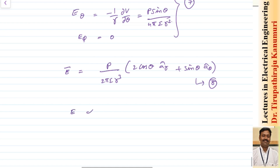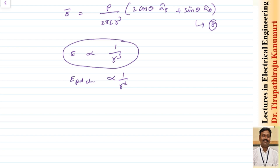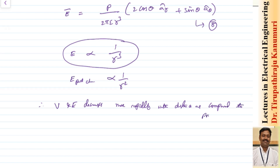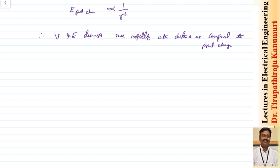From this equation we can observe that the electric field intensity is inversely proportional to R cubed, whereas the electric field intensity due to a point charge is inversely proportional to R squared. So here also E decreases more rapidly when compared to the point charge as the distance increases. Summarizing: both V and E decrease more rapidly with distance as compared to the point charge. I have already provided the link for the material in the description below — there is a Google Drive link where you can download the complete handwritten material as well as snapshots of what I am writing on the screen.